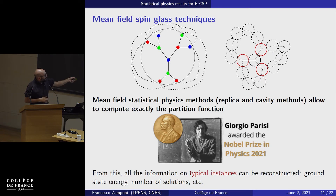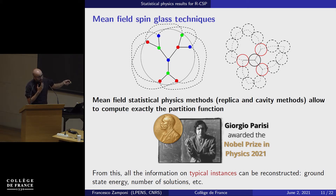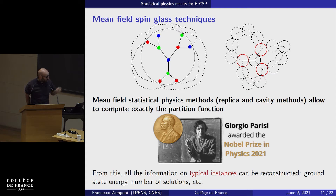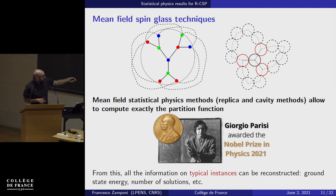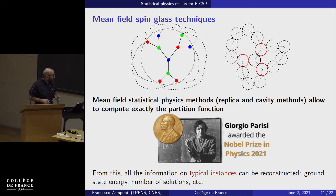To solve these statistical physics mean field models with disorder, people invented the replica method and the cavity method. Using these, you can compute almost everything about your system. Giorgio Parisi was awarded the Nobel Prize for his work understanding how to use the replica method to compute low-temperature states — solutions — of these problems. From such calculations you can obtain most of the information you want on typical instances: the number of solutions, whether the problem is SAT or unsat, where the threshold is, and so on.